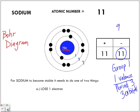Now what is the count of protons to electrons? It used to be 11 to 11. But now if we count the number of electrons, we have more protons than we have electrons — one more. So the charge is plus one. It's no longer sodium — it's now a sodium ion. This is now a sodium ion. It is no longer a sodium atom because there's a difference between the number of protons and the number of electrons.